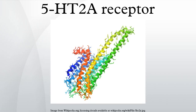Full agonists include: 25I-NBOMe and its 2-methoxy analog 25I-NBOMe, (R)-DOI, TCB-2, Bromodragonfly, and mescaline, which is a full agonist at several serotonin receptors. O4310 is a 5-HT2A selective compound claimed to have 100x selectivity over 5-HT2C and be inactive at 5-HT2B. PHA-57378 is a dual 5-HT2A/5-HT2C agonist with anxiolytic effects in animal studies.